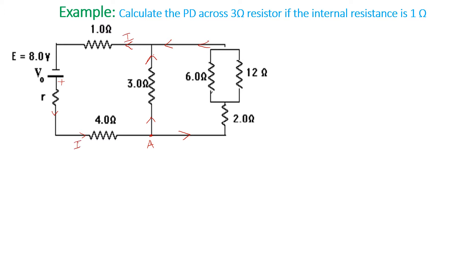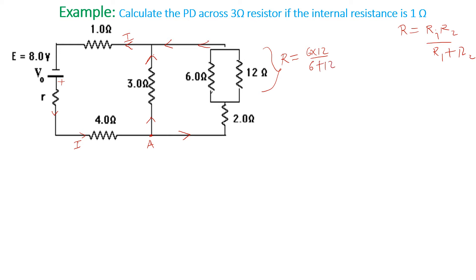The total current coming out equals the total current going in because charge is conserved. We also remember that if resistors are in parallel, the total resistance between them is R1 times R2 over R1 plus R2. We start with the parallel combination of the six and twelve-ohm resistors. The total resistance between them is going to be 6 multiplied by 12 over 6 plus 12.